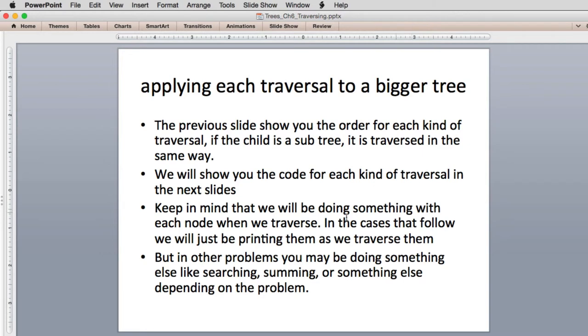Keep in mind that when we're doing something with each node, as we traverse, the code that they show you in this chapter to just traverse just prints out the key of the node. So you would see the keys listed in the order that you're traversing. But there are many things you can do besides just print the key. You might be searching, so you might want to traverse all the nodes to look for a matching key. You might be traversing all the nodes to sum something up about them, or you might be doing something else.